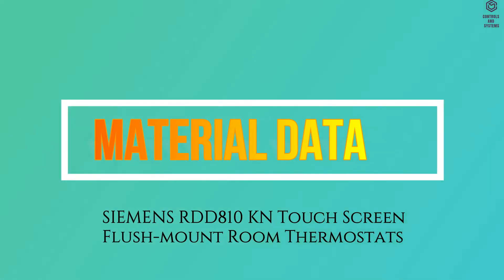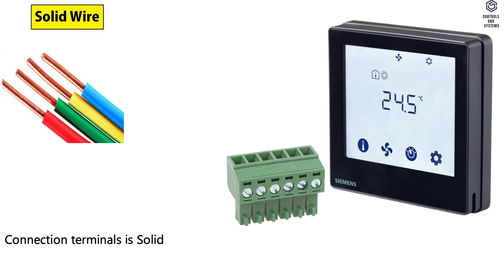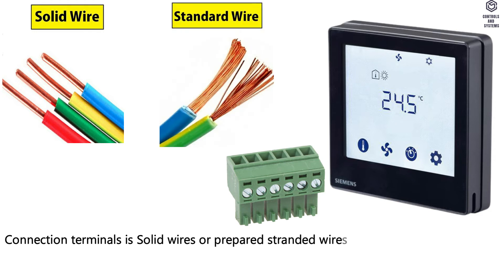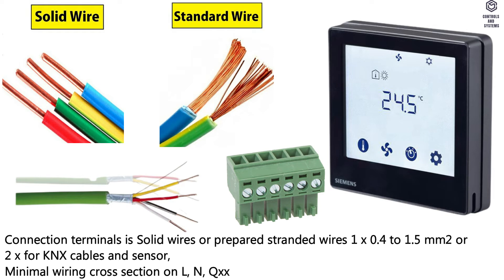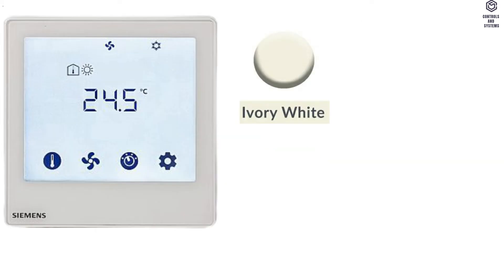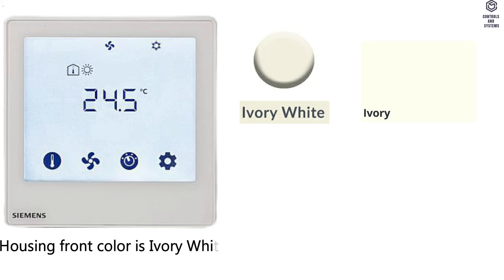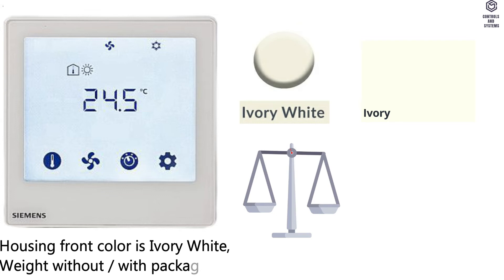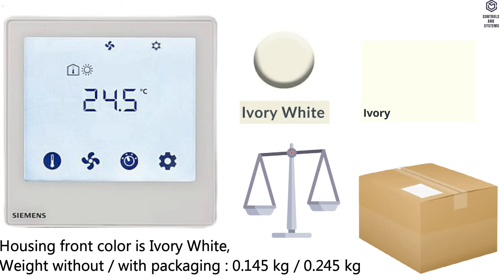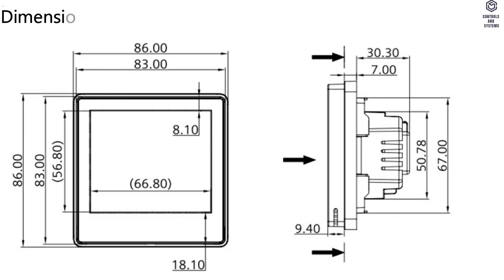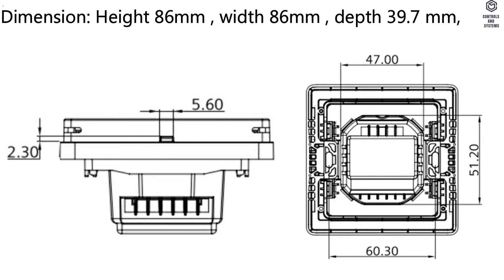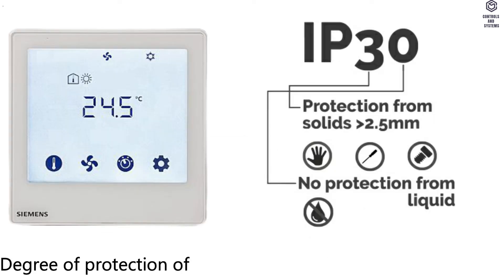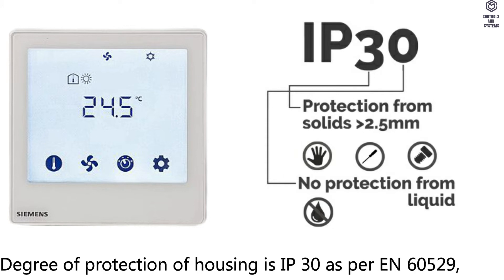Material Data: connection terminal accepts solid wires or prepared stranded wires, 1 × 0.4 to 1.5 mm² or 2× for KNX cables and sensor. Minimal wiring cross-section on L, N, QXX is minimum 1.5 mm². Housing front color is ivory white. Weight without packaging: 0.145 kg; with packaging: 0.245 kg. Dimensions: height 86 mm, width 86 mm, depth 39.7 mm. Degree of protection of housing: IP30 as per IEC 60529.